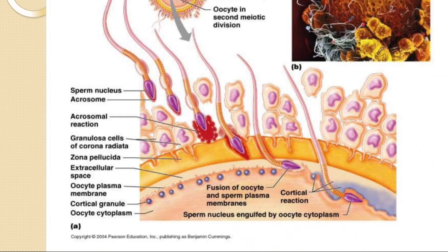Once one sperm enters, the egg does not allow other sperms to enter. There is a cortical reaction — the cortical granules cover up and form a layer, which prevents the entry of other sperms into the ovum. Only one sperm at a time can enter.